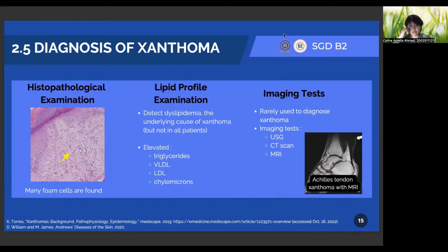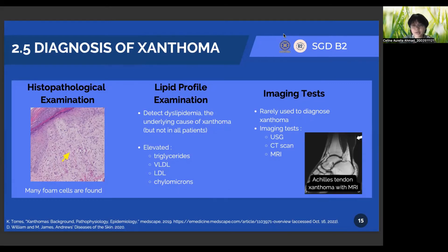When the diagnosis of Xanthoma is still unclear, we can do a histopathologic examination, possibly through a skin biopsy. The histopathologic features of all types of Xanthoma are actually similar, but the numbers of phagocytes, lipid deposition, and inflammatory cells may vary across the types. The next examination is a lipid profile examination, because many people with Xanthoma usually develop it from dyslipidemia, although not all patients with Xanthoma have dyslipidemia. An imaging test is also valid for specific types of Xanthoma — for example, Erdheim-Chester syndrome Xanthoma and Xanthoma disseminatum — that can be tested using CT scan, MRI, and also ultrasound.